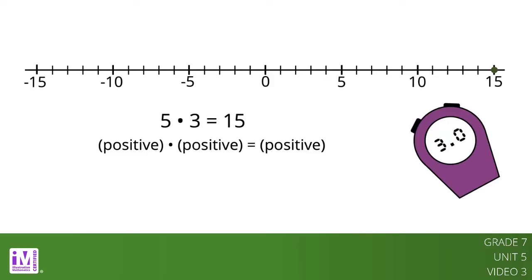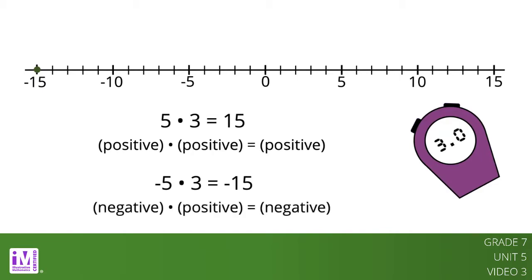On the other hand, if you're moving 5 meters per second to the left, then your velocity is negative 5 meters per second. If you start at zero and move negative 5 meters per second for 3 seconds, you will be 15 meters to the left of zero. In other words, negative 5 times 3 equals negative 15. In general, a negative times a positive equals a negative.